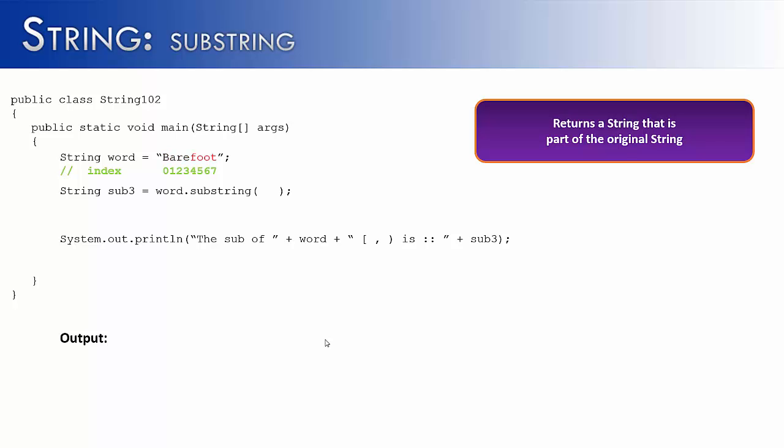Let's change it up a little bit and say, instead of looking for bare, I want to look for foot. So I've called it sub3. I've used the same print line statement. And let's see what goes in here. Hopefully you realize that I'm going to start at 4. And I need to go one more than the last one. And I would get 8. So when I run the program, I would say the sub of barefoot 4, 8 is foot. And that is exactly what I'm looking for, the foot out of barefoot.